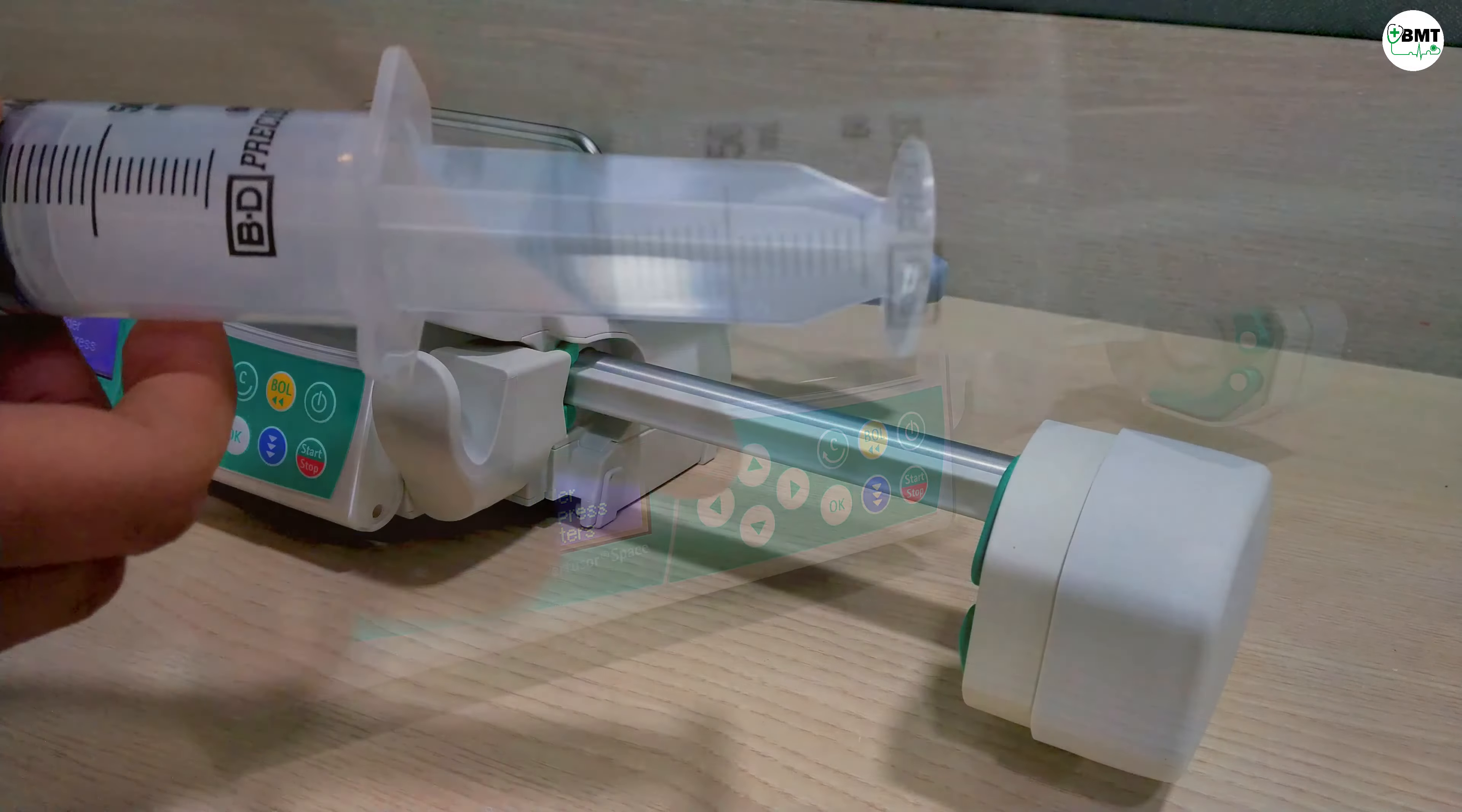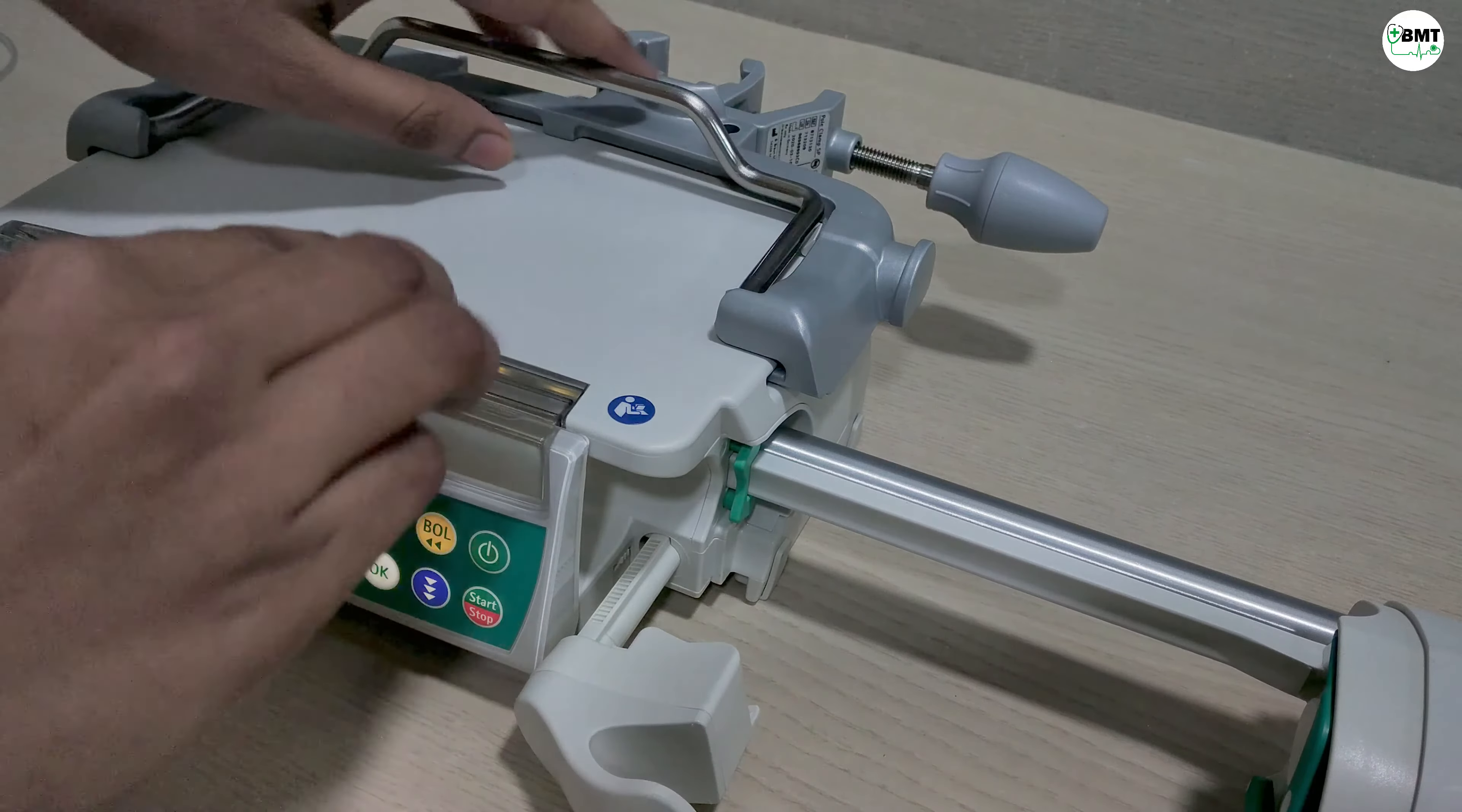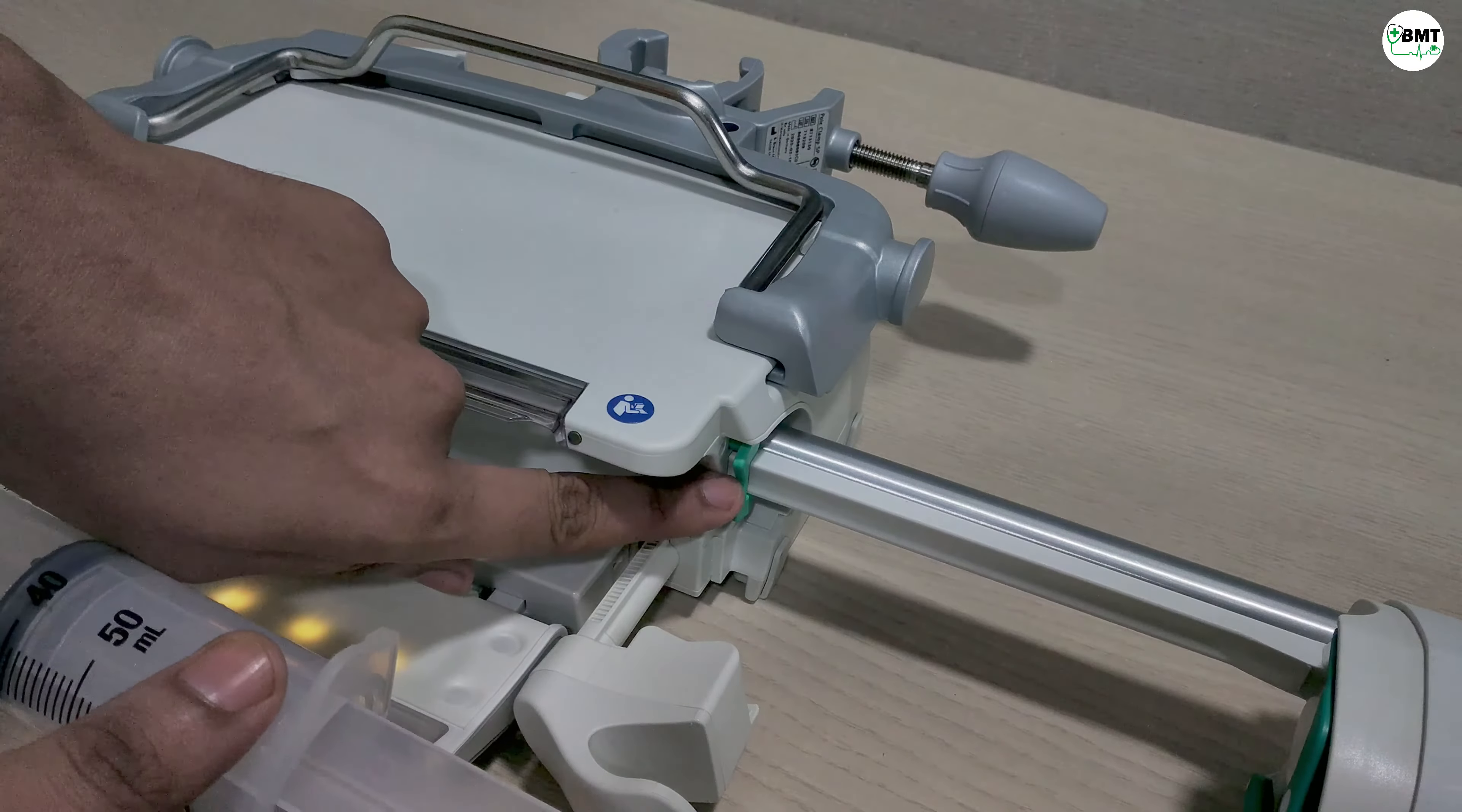Now how to load syringe. This is a 50cc syringe. Open syringe holder, this and then this. Then insert this syringe over here.